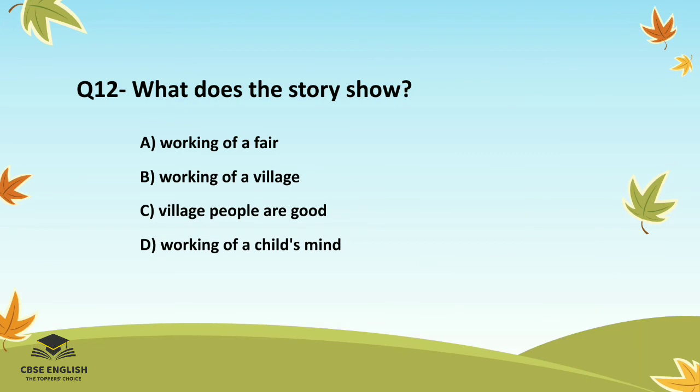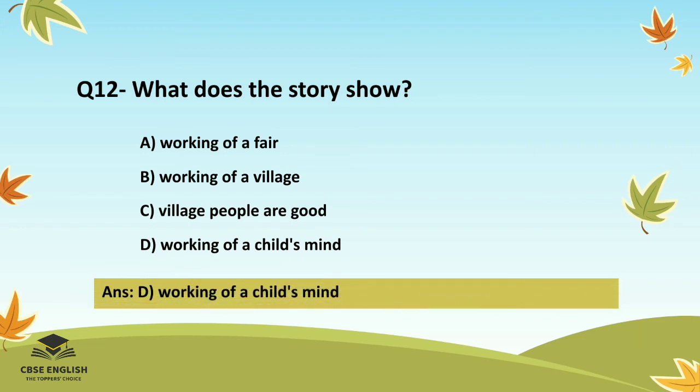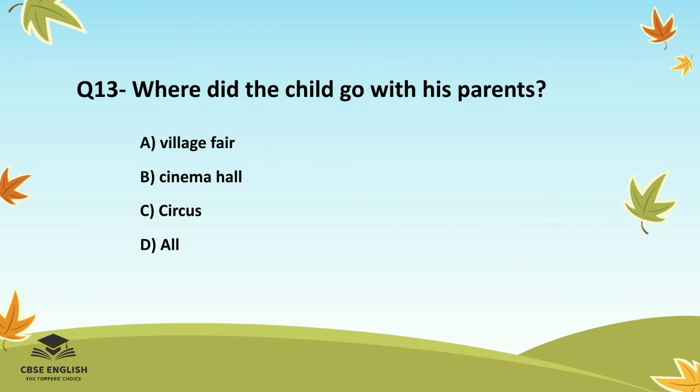Question number twelve: What does the story show? Options are: working of a fair; working of a village; village people are good; or working of a child's mind. The correct answer is working of a child's mind.